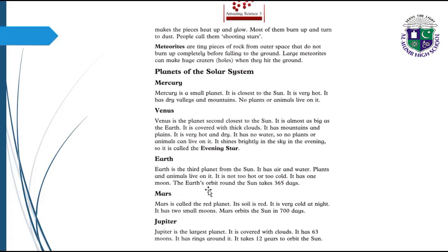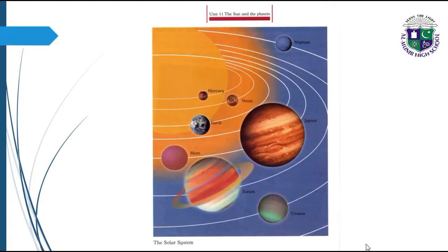Mars is called the red planet. Its soil is red. It is very cold at night. It has two small moons. Mars orbits the Sun in 700 days. Jupiter is the largest planet. It is covered with clouds. It has 63 moons. It has rings around it. It takes 12 years to orbit the Sun. Here students, we have the picture of Jupiter, Neptune, Venus, Mercury, Earth, Mars, Saturn, and Uranus.